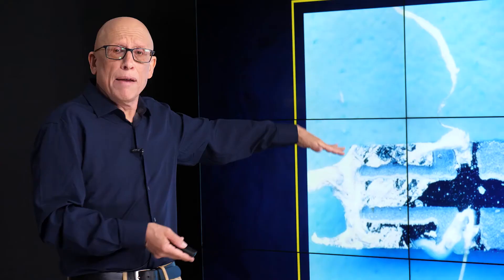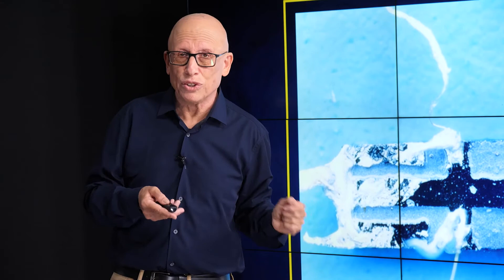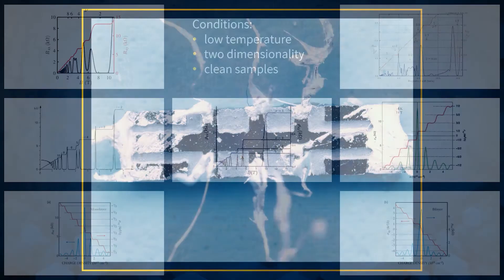And yet you get an answer from this sample that is precise and determined only by fundamental constants. It doesn't matter. This is made of gallium arsenide, but you do the same experiment on graphene, on silicon, on silicon germanium, on zinc oxide, and lots of other materials, and you get the same answer. There's something here that's very fundamental. And this is why we are going to talk so much about it in this course.